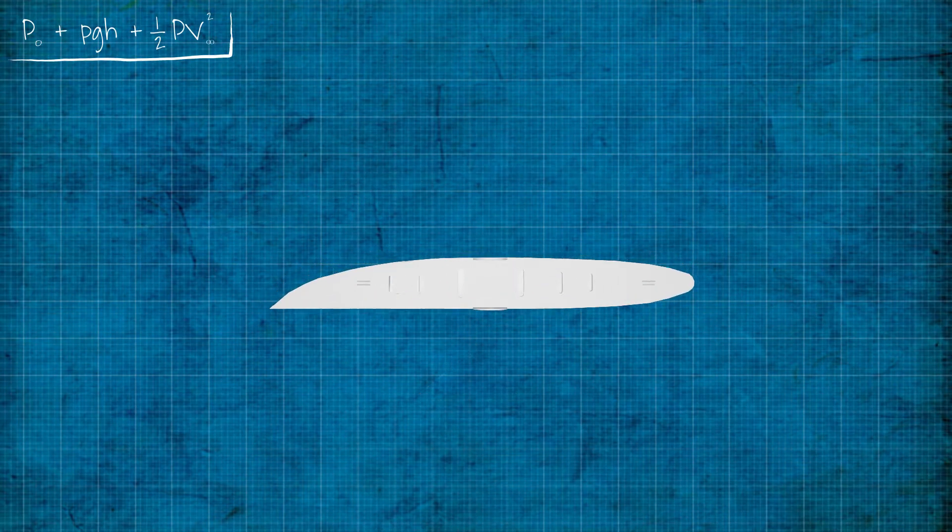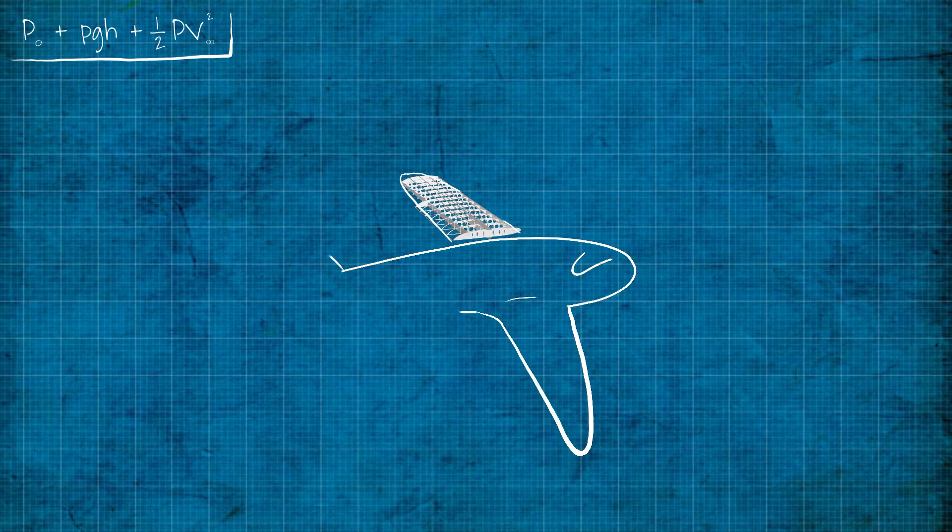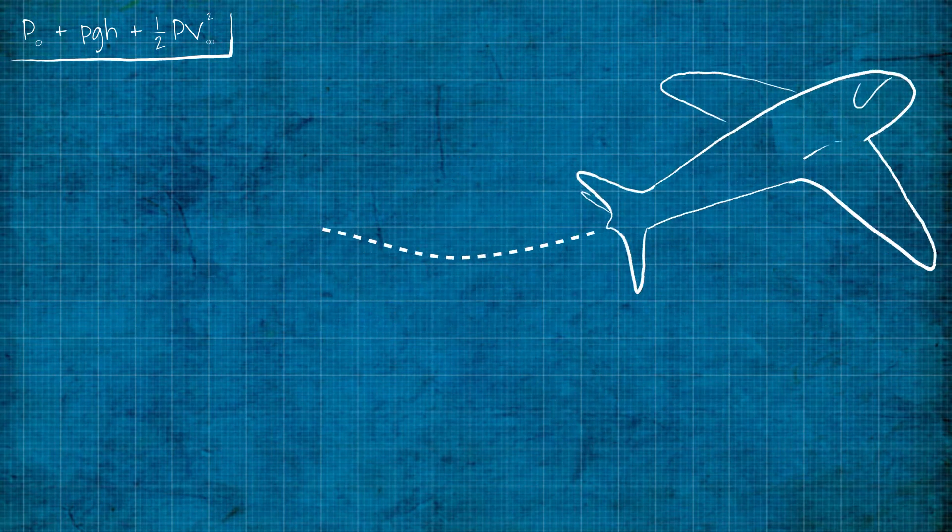When this pressure difference exists, then you'll have lift on the wing. The overall force on the wing due to aerodynamics will be upwards.